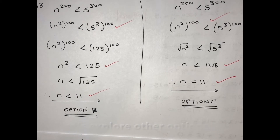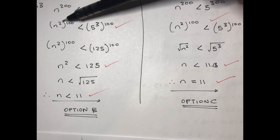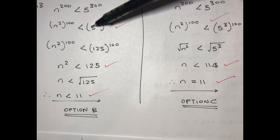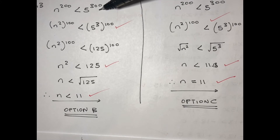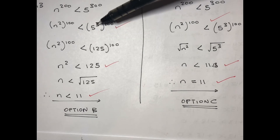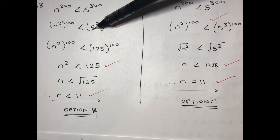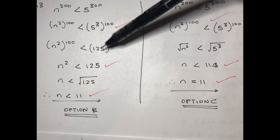There are more options to solve this question. Option B: you can write n to the power 200 in a different form — it's the same as n to the power 2 times 100. Similarly, 5 to the power 300 is the same as 5 to the power 3 times 100. So 5 to the power 3 equals 125.